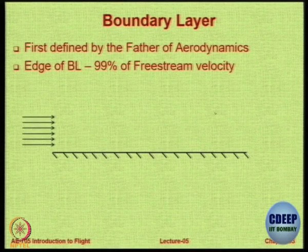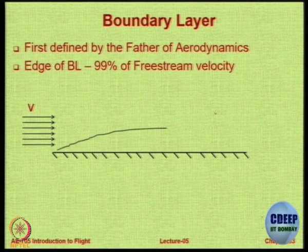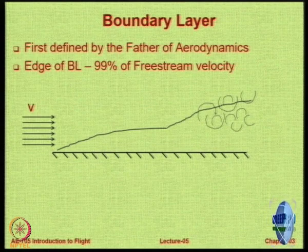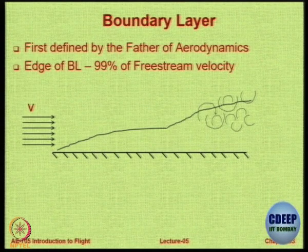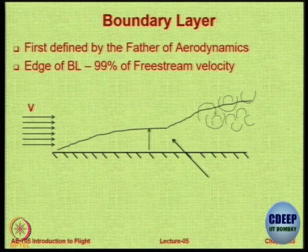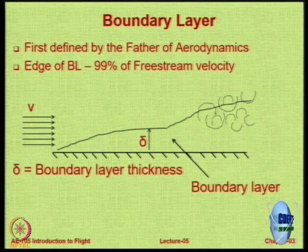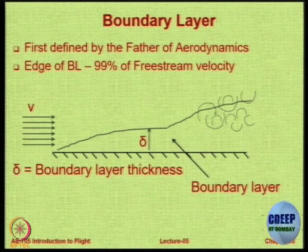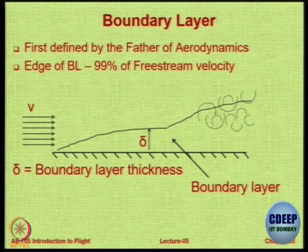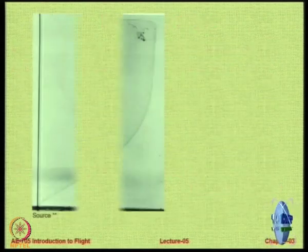Here is a flat plate with a steady uniform flow of ambient velocity V. A boundary layer builds up and changes over distance. After some time, the boundary layer thickness increases very rapidly. This particular thickness is called the boundary layer thickness delta, and notice that delta is not constant — it is continuously increasing up to some point, and then there is a rapid increase beyond that. The boundary layer thickness does not remain constant as the flow Mach number changes.